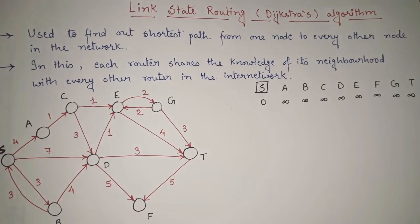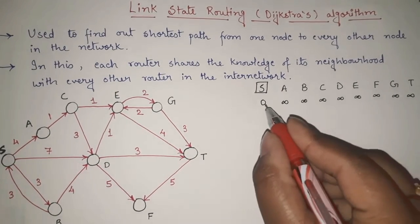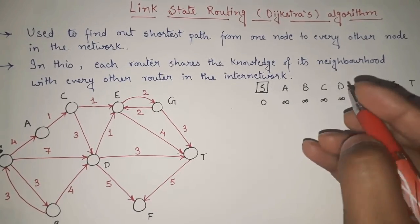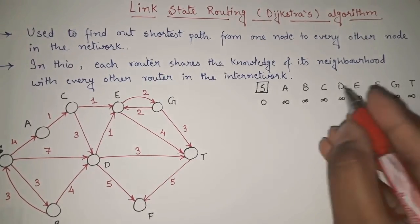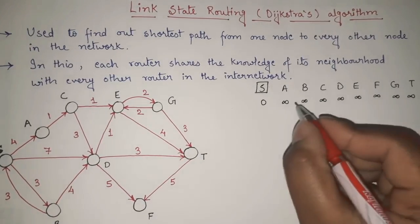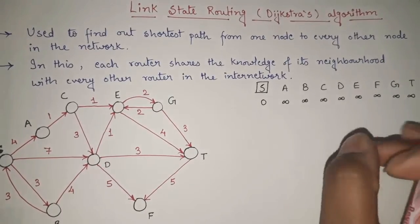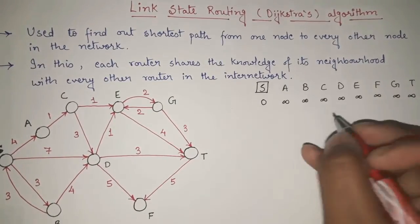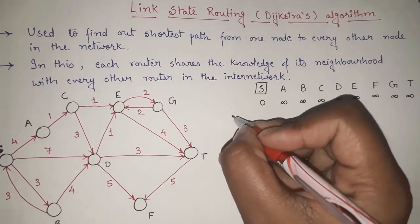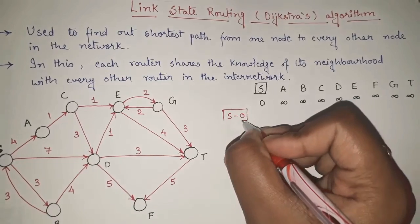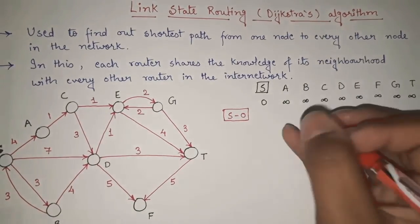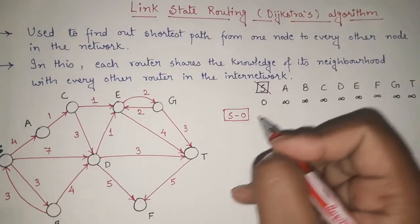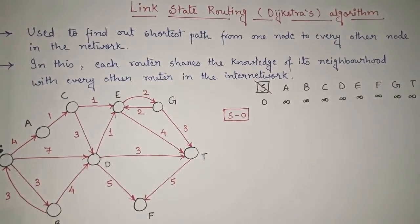After every step, out of all the values in the row, whatever is minimum, I will consider that value to be final. Here, among all the values, they are all infinite except S which is 0. So 0 is the minimum, and I finalize S as 0. For further calculation, S is finalized and I will find the shortest distances for all the others. Now I have to see which nodes are directly adjacent to S.